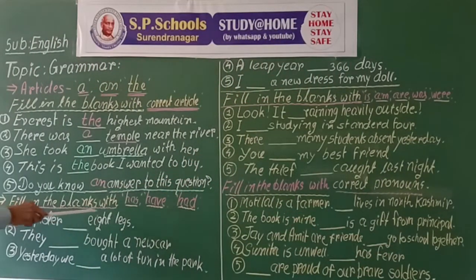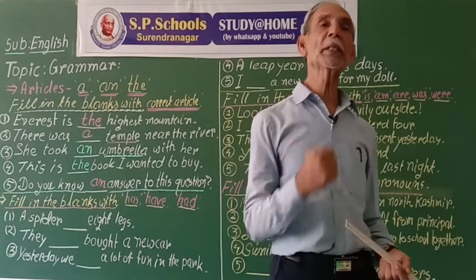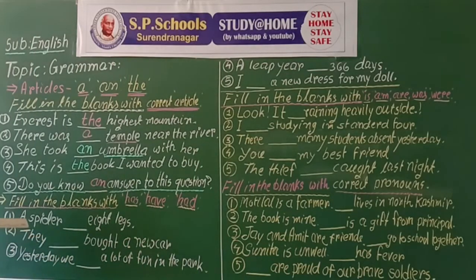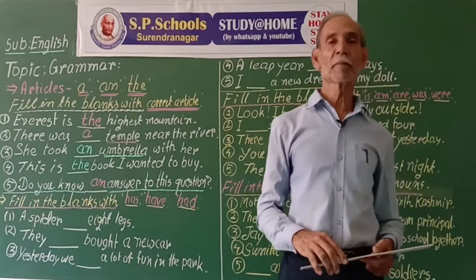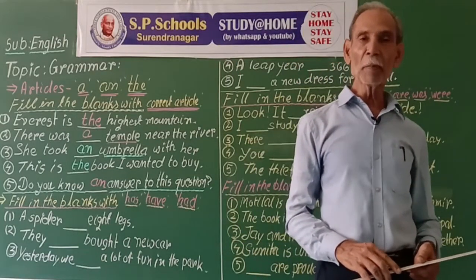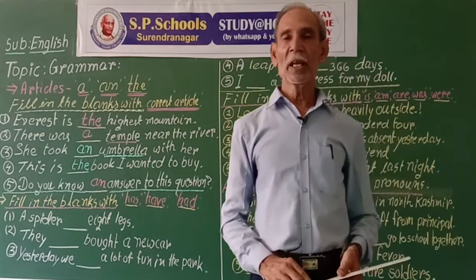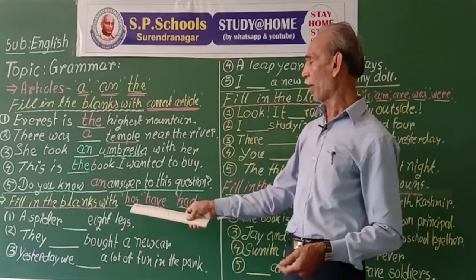Now fill in the blanks with 'has', 'have', or 'had'. 'To have' shows possession, ownership, or state. 'Has' is used with third person singular — he, she, it, or a singular noun. Everywhere else we use 'have', and 'had' is the past form of both 'have' and 'has'.